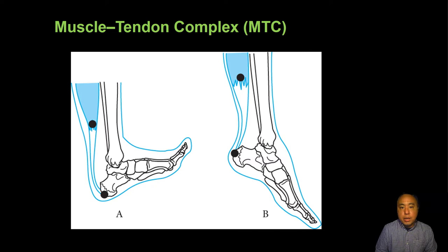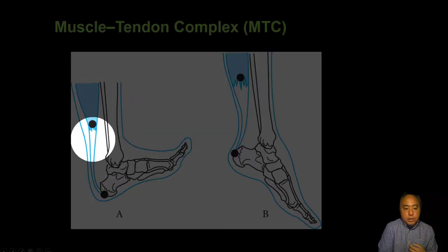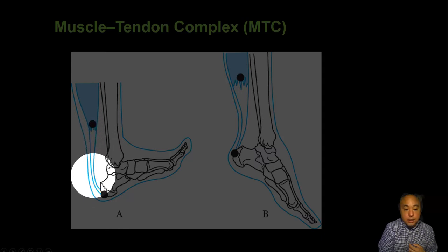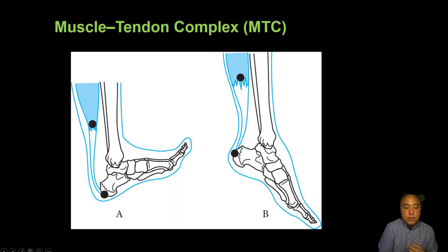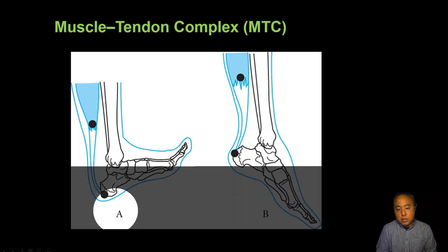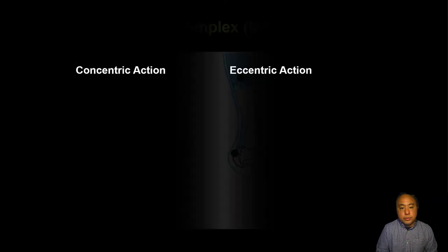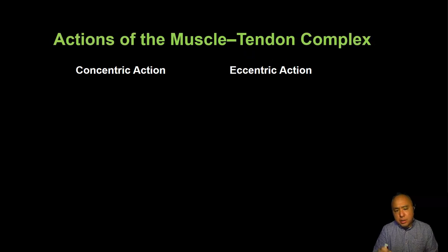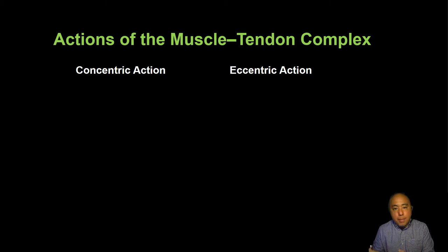Take for example the gastroc — the triceps surae muscles, gastroc and soleus. It contracts and transmits its muscular force to the Achilles tendon, which inserts on the posterior side of the calcaneus, thereby creating a plantar flexor torque. That torque is also governed by the moment arm, which I'll talk about a little bit more — the moment potential of a particular muscle through its moment arm.